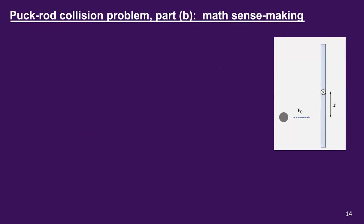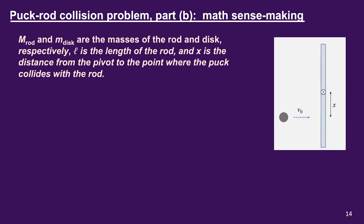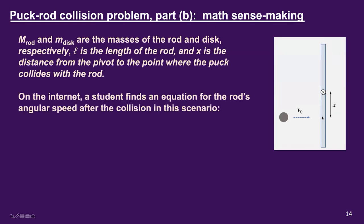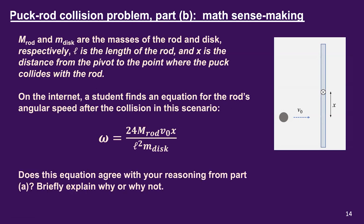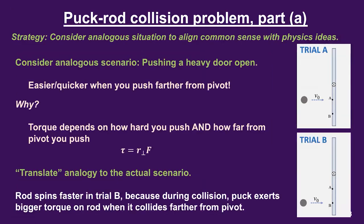Let's move on to part B — now comes the first math sensemaking question. M-rod and M-disc are the masses of the rod and disc respectively. Curly L is the length of the rod. X, as shown in the diagram, is the distance between the pivot point and the point where the puck collides with the rod. A student finds an equation for the rod's angular speed after the collision. Does this equation agree with the reasoning from part A — that the rod spins faster in trial B because of a larger torque? Briefly explain why or why not. Please pause the lecture and solve this.